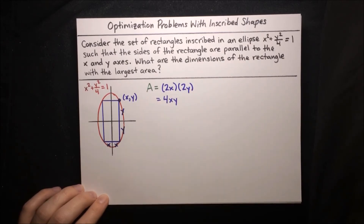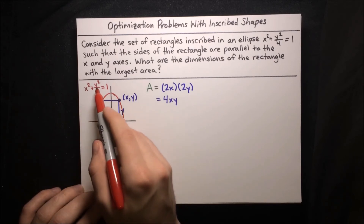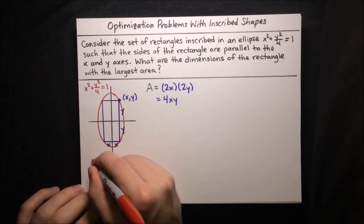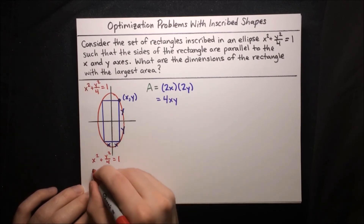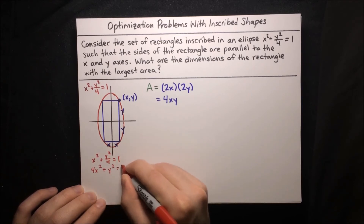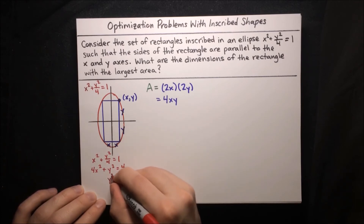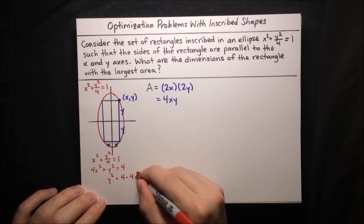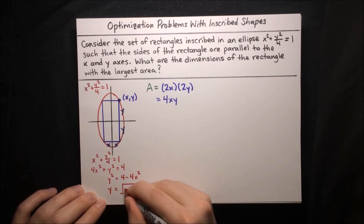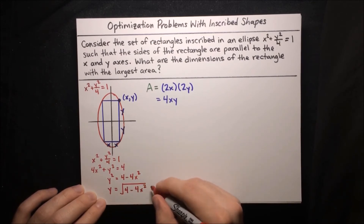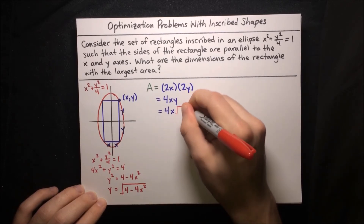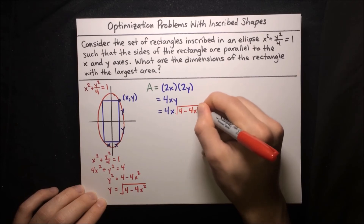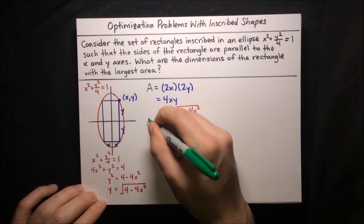We want to express this area function in terms of a single variable. We have the ellipse equation x squared plus y squared over 4 equals 1. Multiplying by 4 gives 4x squared plus y squared equals 4. Solving for y squared: y squared equals 4 minus 4x squared, so y equals the square root of 4 minus 4x squared, taking the positive root since it represents a length. Substituting, area equals 4x times the square root of 4 minus 4x squared.